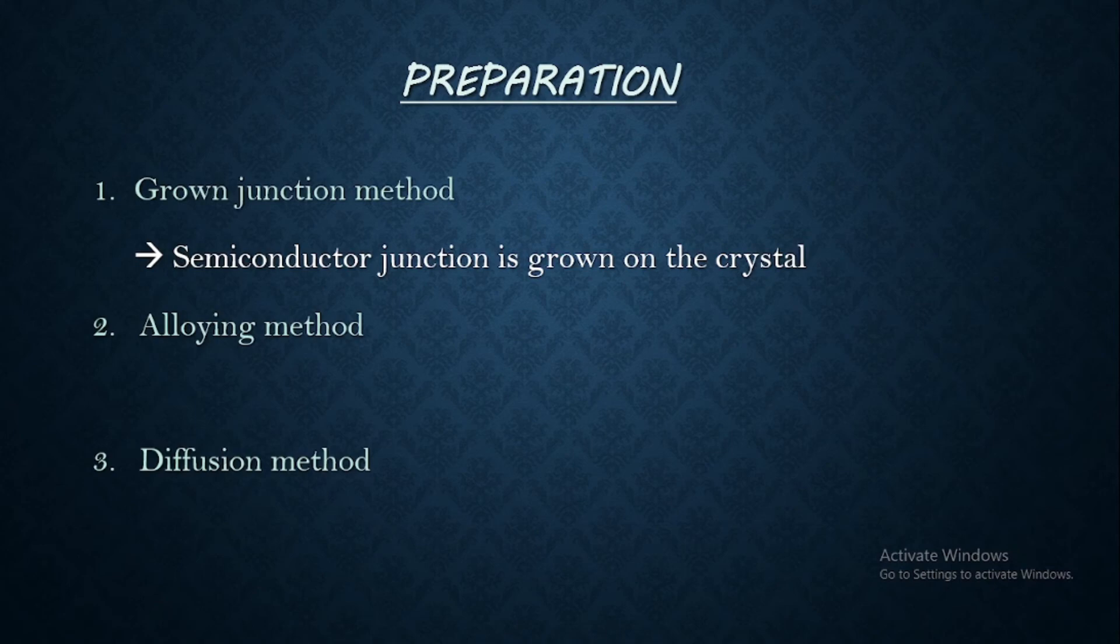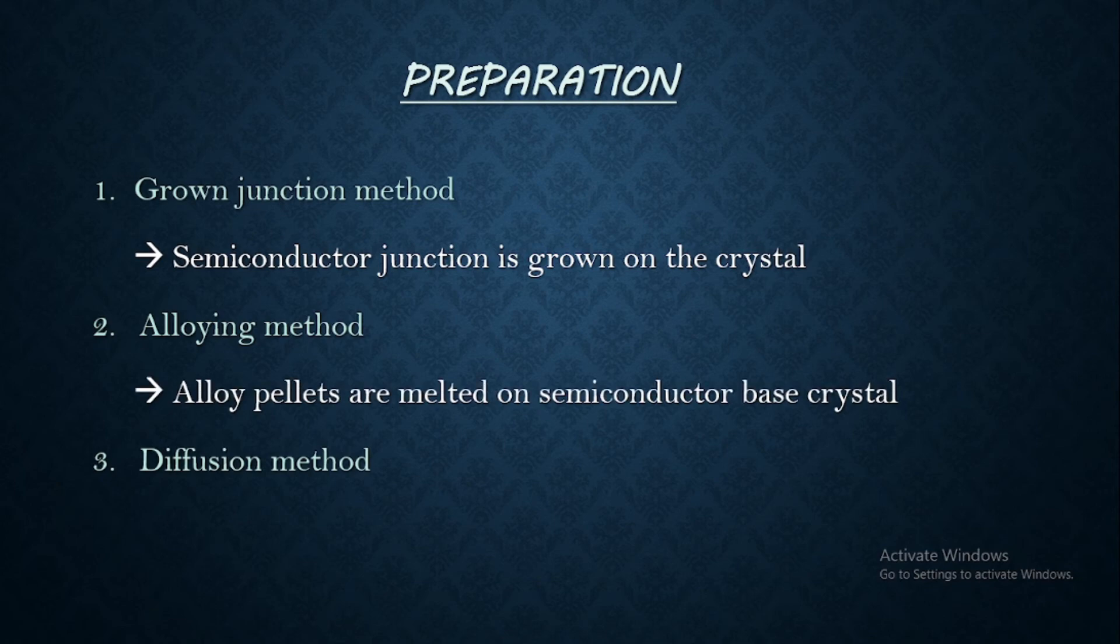Then moving to the second, that is in alloying method a semiconductor base crystal is taken and alloy pellets or foil is melted on it. So this is going to give rise to P-N junction. And finally, the diffusion method.